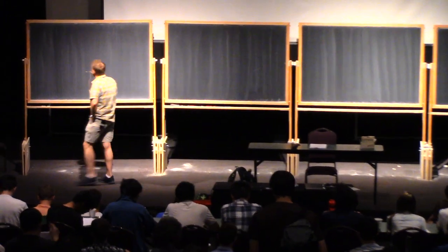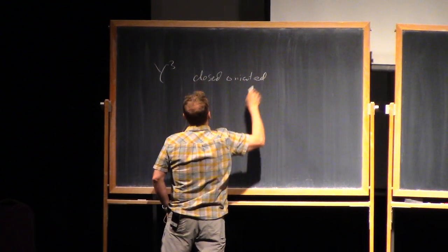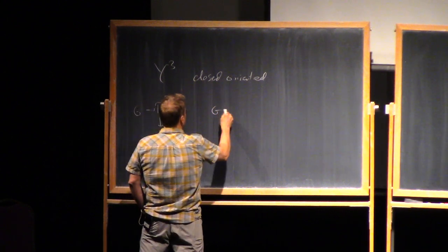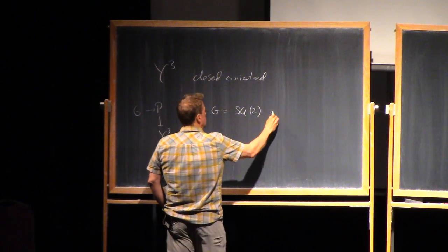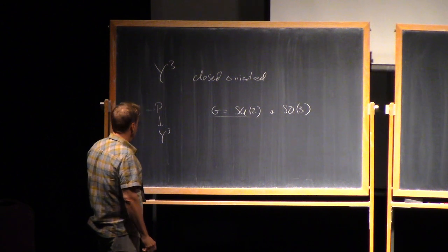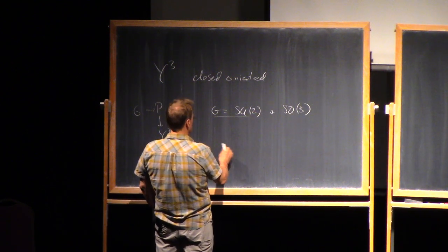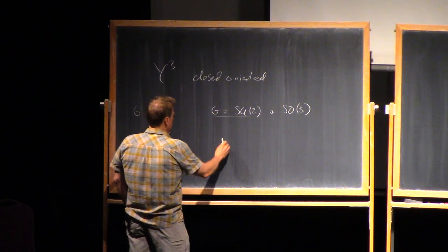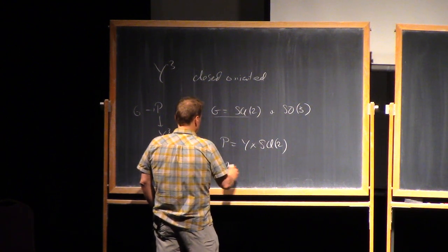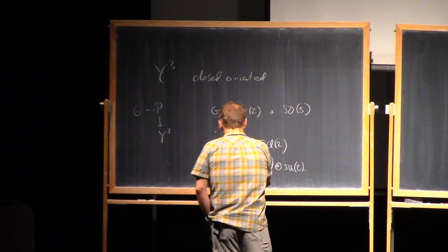The setting is that we're going to look at a three-manifold — usually it'll be closed and oriented. We're going to pick a principal bundle over the three-manifold, and usually we'll just take G to be either SU(2) or SO(3). For the moment, let's think about the case of SU(2). For an SU(2) bundle, P is necessarily trivial, so we can think of a connection as the same thing as a one-form with values in the Lie algebra of SU(2). We'll call that one-form little a.